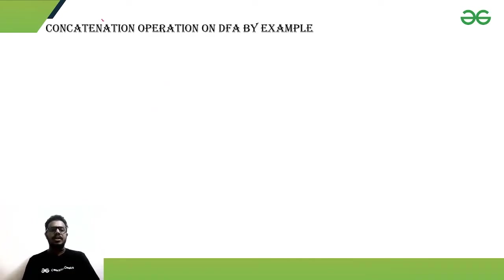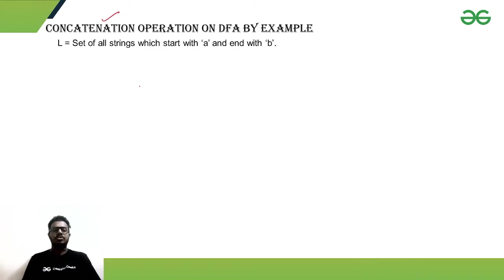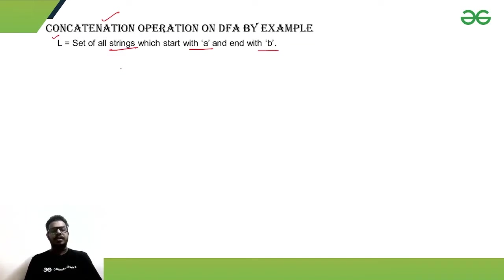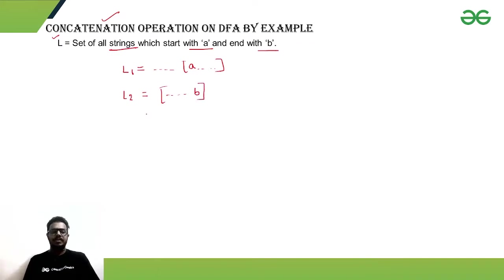Now we look at the concatenation operation with a given example. L is a collection of strings where the starting symbol is A and the ending symbol is B. We define sub-language L1 as all strings starting with A — after that anything can come — and L2 as all strings ending with B.